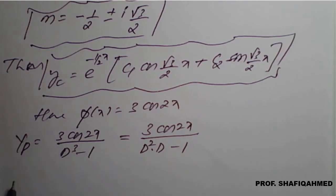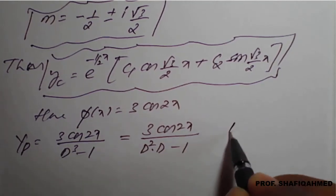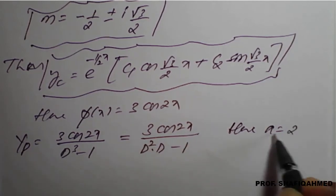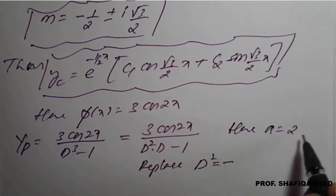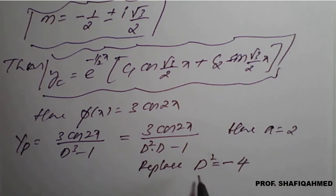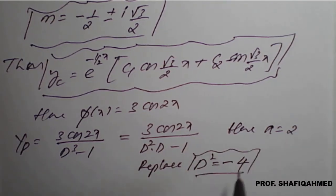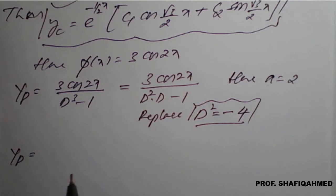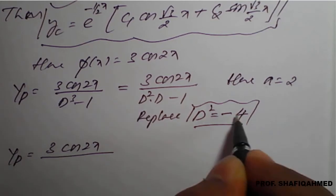The coefficient of x is 2, so a = 2. We replace d² = -a² = -4. So replace d² with -4 in the expression, giving yp = 3cos(2x) / [(-4)·d - 1].